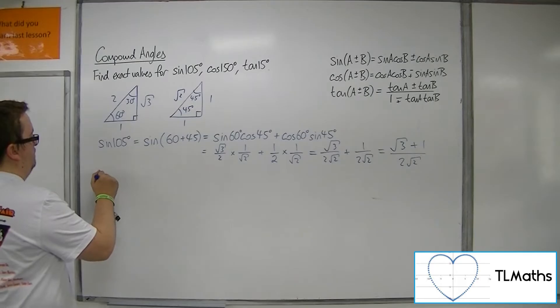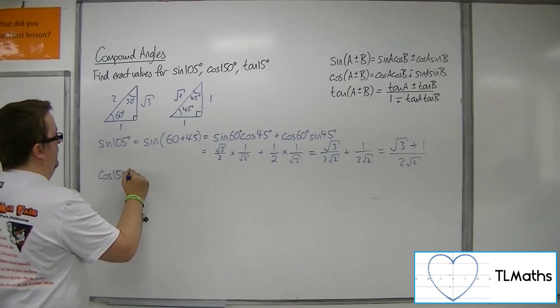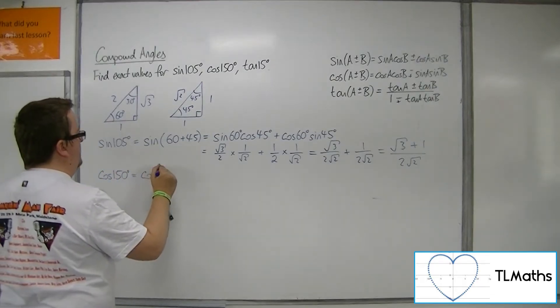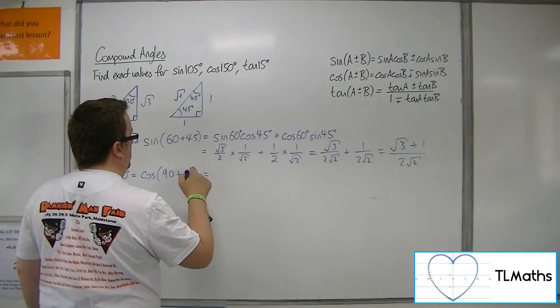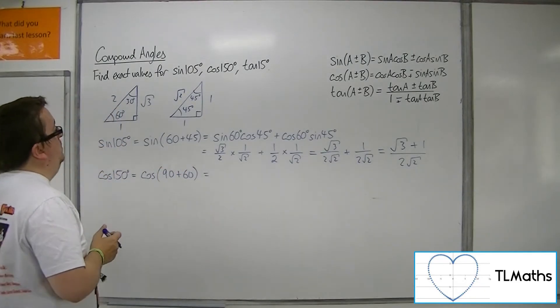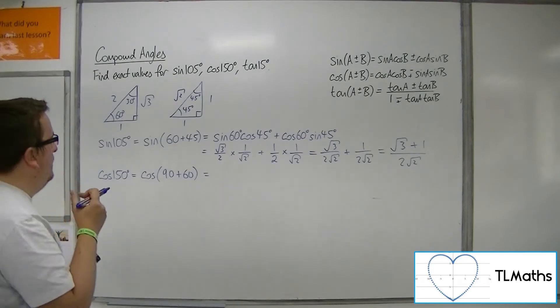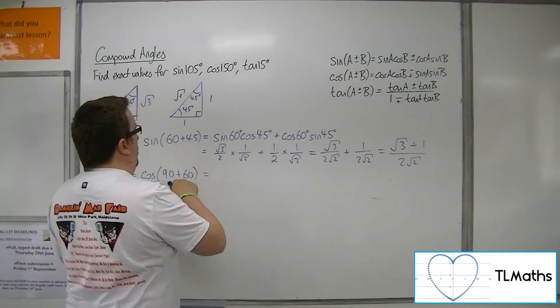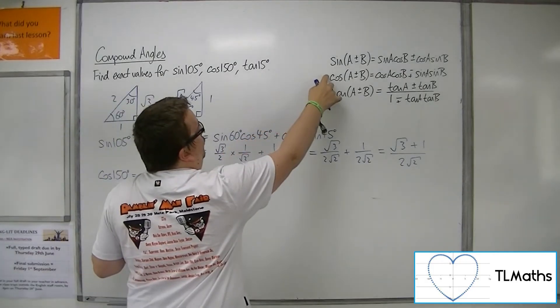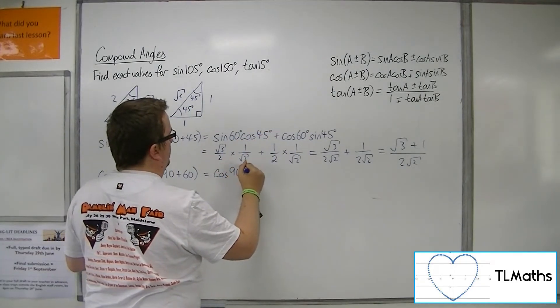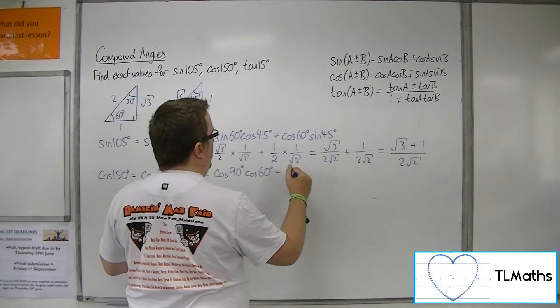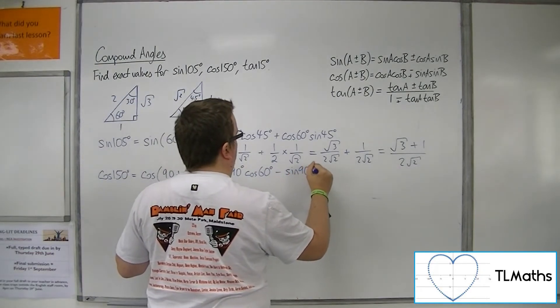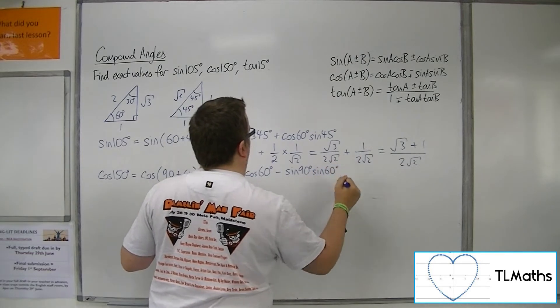Cos of 150. So 150 can be gained by adding 90 and 60 together. Cos of 90 plus 60, using this formula here, will be cos 90, cos 60. Now because that's plus, this must be minus sine 90, sine 60.